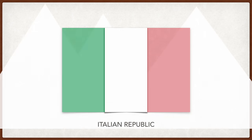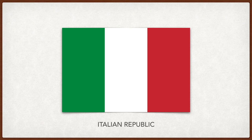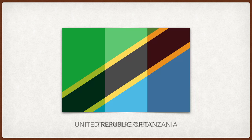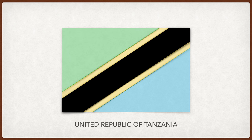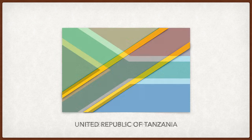Italy. Green represents the country's land, white the snow-capped Alps, and red the blood spilt in the wars of independence. A more religious interpretation of the green, white, and red are hope, faith, and charity, respectively. Tanzania. Green is for the land, black is for the Swahili people, the natives of Tanzania, and blue is the Indian Ocean, which it borders. The yellow stripe represents the country's mineral wealth.